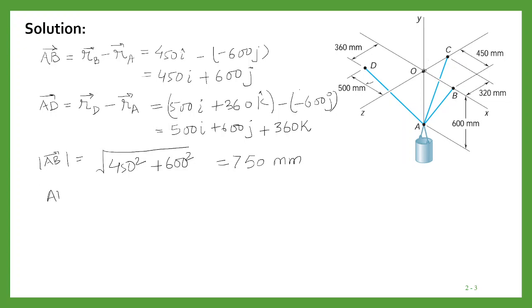Similarly, AD will be equal to the square root of 500 squared plus 600 squared plus 360 squared. Simply square them and take the root, and then you will get 860 mm as the answer.